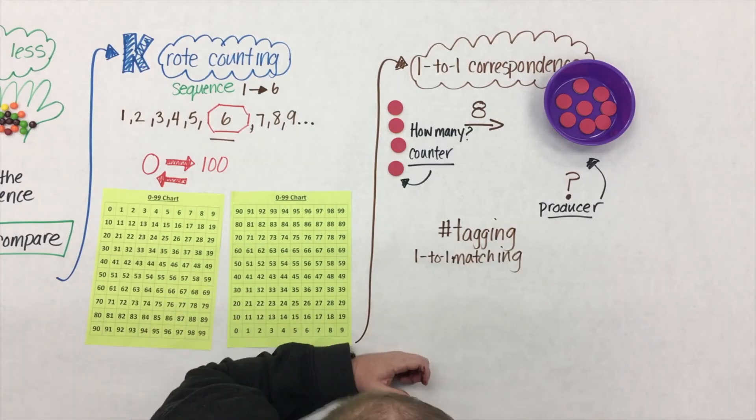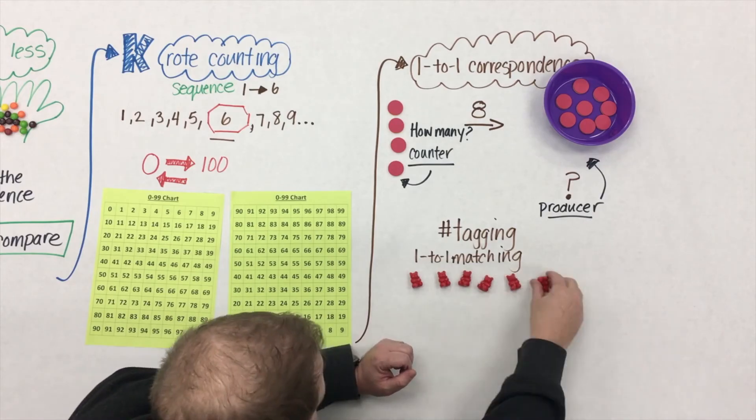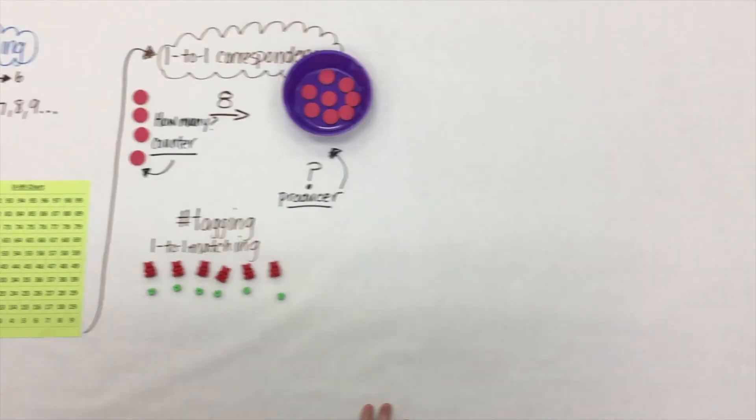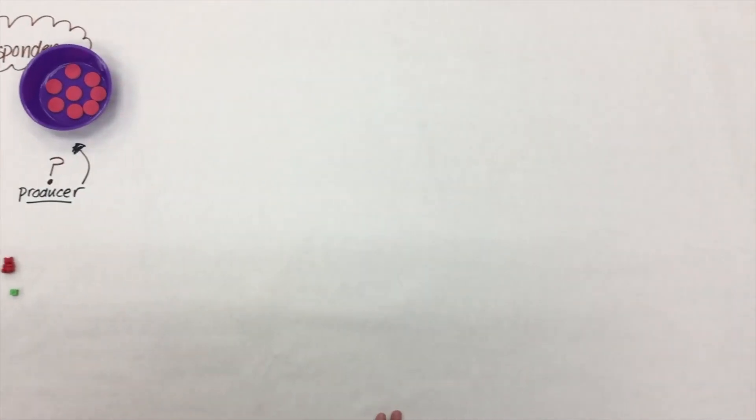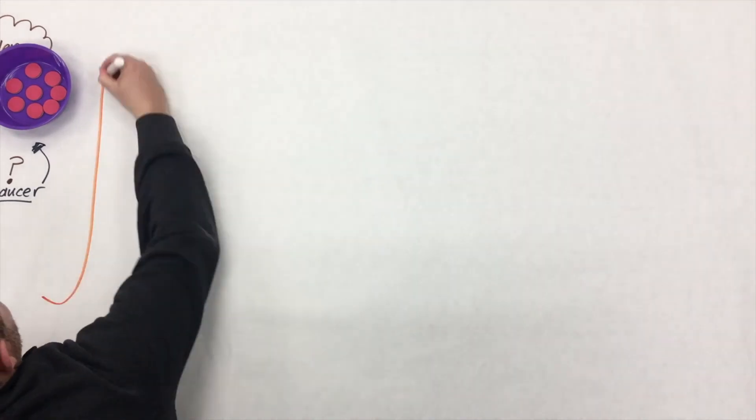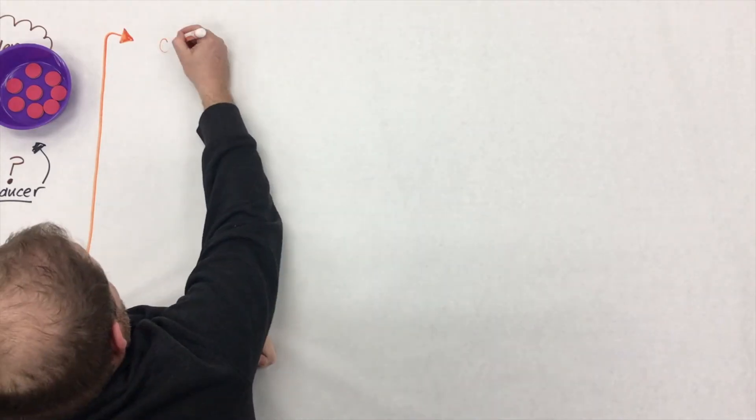One way we can do that is by building this understanding of tagging, but not always with numbers. So here we have 6 bears, and we want to match each bear to a green present. This idea that's happening in 1 to 1 correspondence is really, really big. We need to make sure that we devote enough time for our students to develop this understanding.